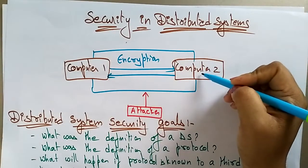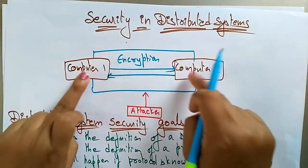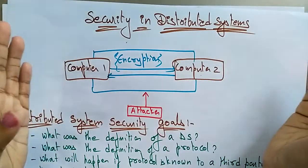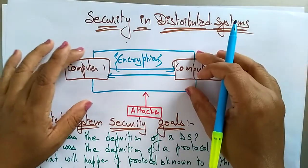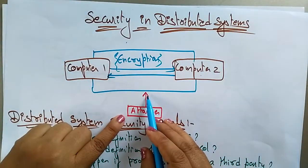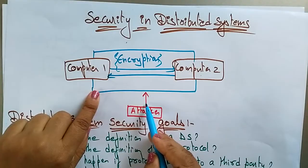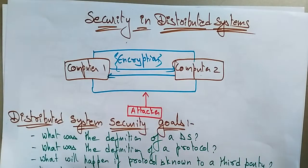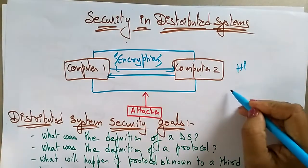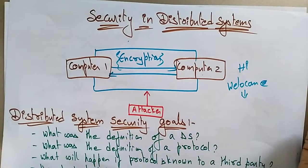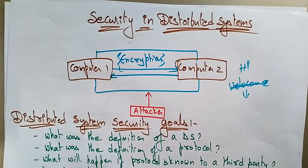Consider two computers communicating a message — that message will be under encryption. Encryption means we convert the message into mathematical codes. If an attacker is attacking, he can't reach computer one or computer two. He can only read the encrypted message, but he can't understand it. If I send a 'hi' or 'welcome' message, it will be encrypted with some codes so the attacker cannot understand it. This is how you maintain security in a distributed system.